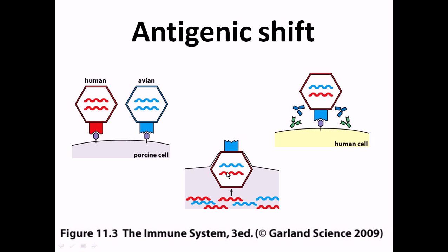Once the new progeny virus particles are assembled and released, an important event takes place: the new virus combines genetic material from both the human strain and the avian strain. The resulting virus carries genes from both, with modifications in both hemagglutinin and neuraminidase spikes — roughly a 50/50 genome change. This completely changes the strain of the virus. It can now attack human cells, but the antibodies developed against the previous human strain will not work because this virus also carries the avian genome. A completely different and dangerous new strain has originated.